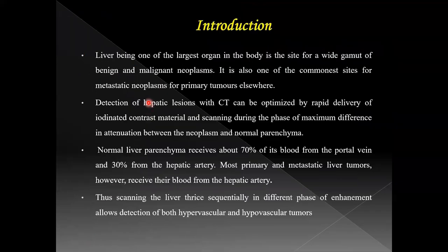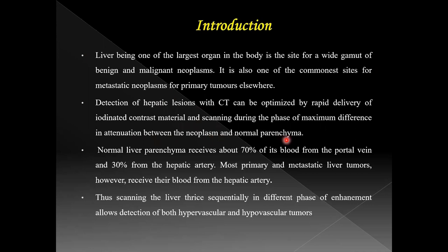The liver, being one of the largest organs in the body, is the site for a wide gamut of benign and malignant neoplasms. It is also one of the commonest sites for metastatic neoplasm from primary tumors elsewhere. Detection of hepatic lesions with CT can be optimized by rapid delivery of iodinated contrast material and scanning during the phase of maximum difference in attenuation between the neoplasm and the normal parenchyma.